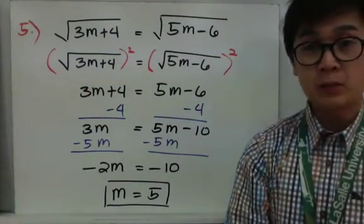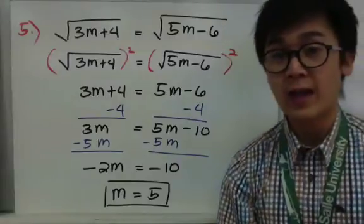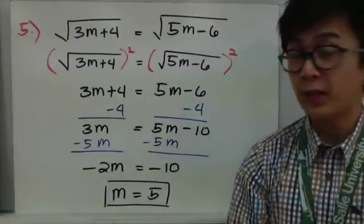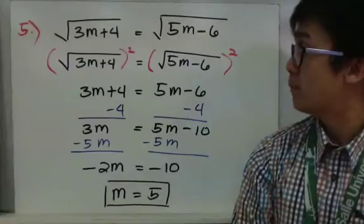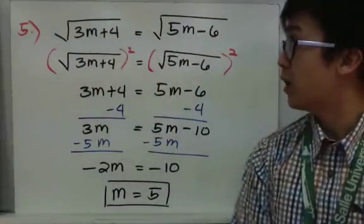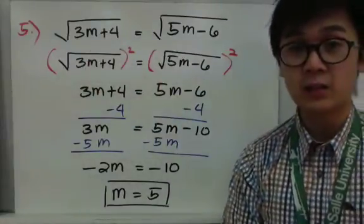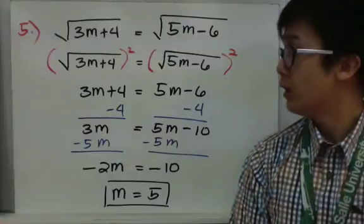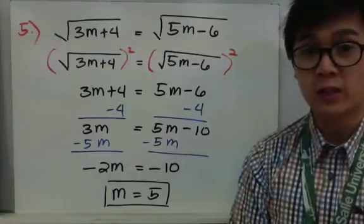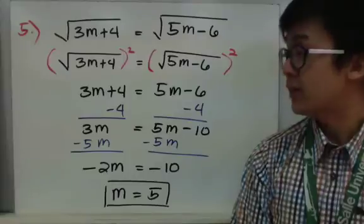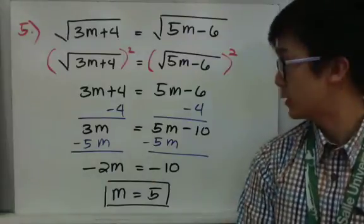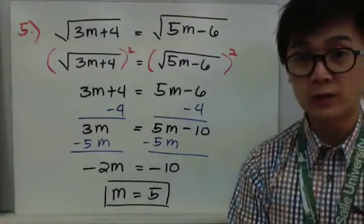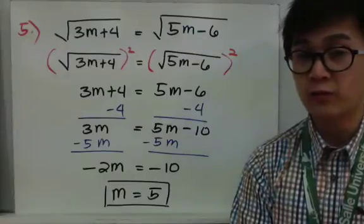For example number 5, you'll notice that we have radicals on both sides of our equation. Since both terms are inside the radical, we need to get rid of the radical symbol. To get rid of the square root, we square both sides of the equation, leaving us with 3m plus 4 equal to 5m minus 6. Since our goal is to get m by itself, we need to get rid of the constant by m.